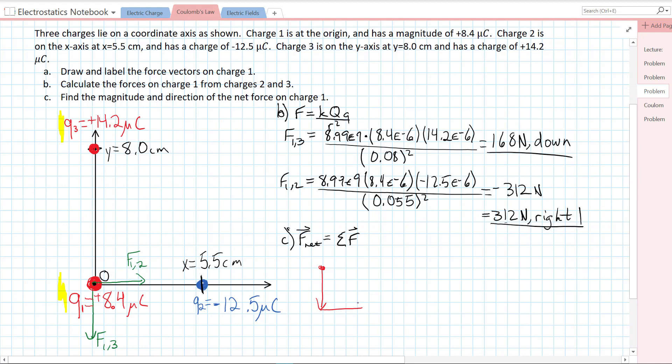We have a downward force and a rightward force. This is the force on 1 from 2. This is the force on 1 from 3. Our net force, which I'm going to do in blue, points down and to the right. That's F net. We need to find the magnitude of that net force and we need to find the direction. I'm going to use this theta here to find the direction.